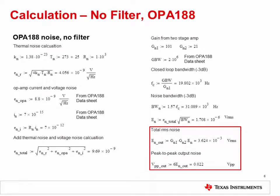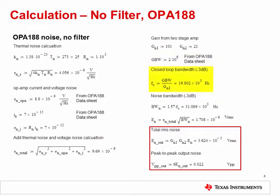I won't go through the entire calculation, but rather will give an overview of the key steps. First, the resistor thermal noise spectral density is calculated using the circuit resistor values. Next, the total input noise spectral density is computed based on the resistor thermal noise, op amp input voltage noise, and op amp input current noise once it's been converted to voltage. The op amp's gain bandwidth and the circuit's closed loop bandwidth are used to calculate the noise bandwidth, which enables you to determine the total input referred RMS noise. Finally, the input referred noise is multiplied by the closed loop gain to compute the total RMS and peak-to-peak output noise.